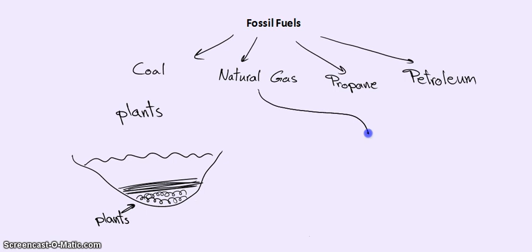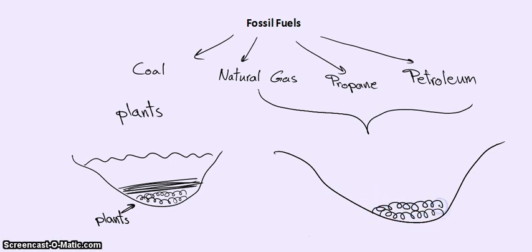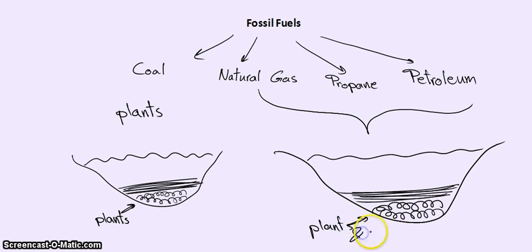While natural gas, propane, and petroleum is created by the remains of tiny sea plants and animals. So the same way, these tiny sea plants and animals were trapped, and in millions of years there was a lot of heat and pressure conditions causing these plants and animals to turn into gas and into oil.